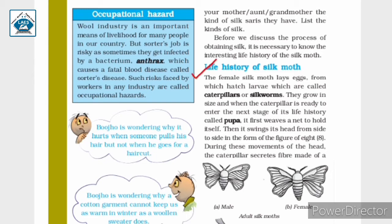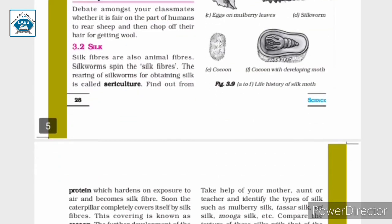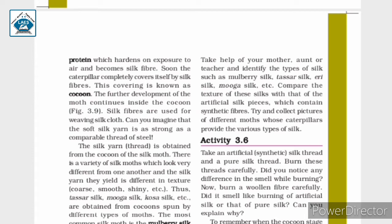The female silk moth lays eggs from which hatch larvae called caterpillars or silkworms. They grow in size, and when the caterpillar is ready to enter the next stage of its life history called pupa, it first weaves a net to hold itself, then swings its head from side to side in the figure of eight. During these movements, the caterpillar secretes a fiber made of protein, which hardens on exposure to air and becomes silk fiber. Soon the caterpillar completely covers itself with silk fibers. This covering is known as the cocoon, and further development of the moth continues inside it.